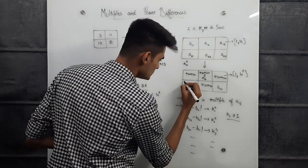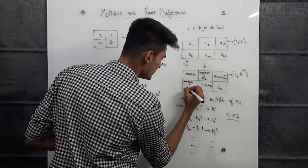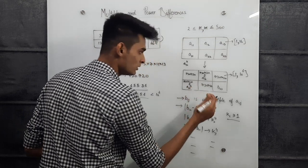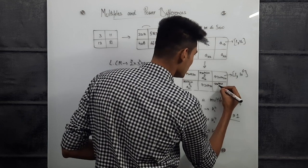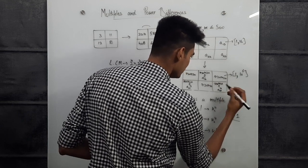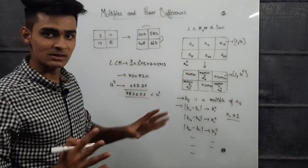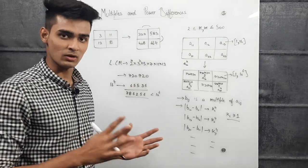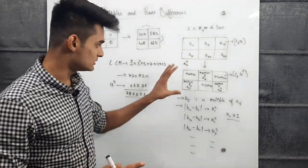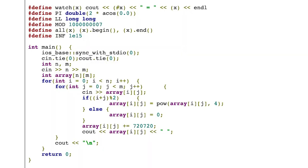Similarly, b_21 = 720720 + a_21^4 and b_23 = 720720 + a_23^4. Every element in the array is less than 10^6, and the absolute difference between every adjacent pair is of the form k^4. This completes the solution. The code is available and I'll have the submission link in the description. Feel free to reach out with any doubts, and like and subscribe for more editorial videos.